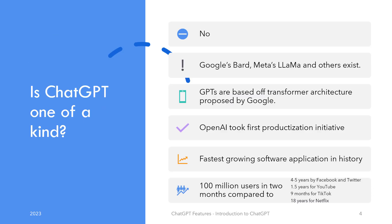Note that ChatGPT is not the only GPT-based chatbot in existence — it's just the most famous one. There are others like Google's BART, Facebook or Meta's LLaMA, among others. Interestingly, GPTs are based off transformer architecture, which was proposed by Google, but OpenAI was able to bring the proper product to market first.